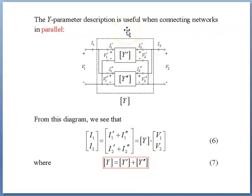The Y parameter description is useful when connecting networks in parallel. You have Y' and Y'', where Y is the networks in parallel. From this diagram, we see that [I1, I2] equals [I1' plus I1'', I2' plus I2''] equals [Y] times [V1, V2], where Y is the addition or combination of Y' and Y''.